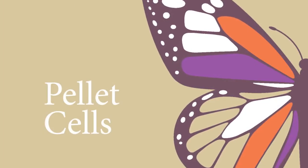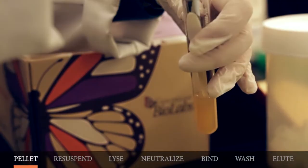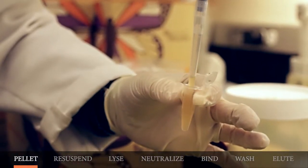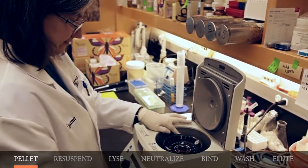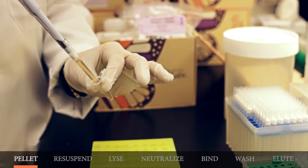Now to the first step, the pelleting. You will need to pellet between one and five mils of bacterial cell culture by centrifuging at 16,000 G or about 13,000 RPMs for 30 seconds. After that, make sure that you carefully discard the supernatant.